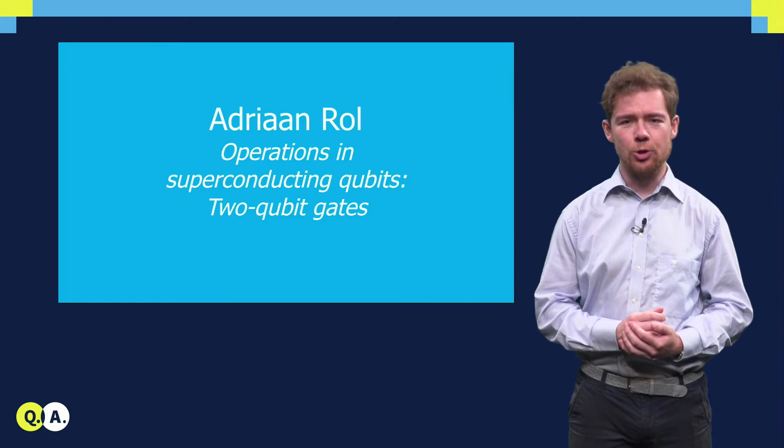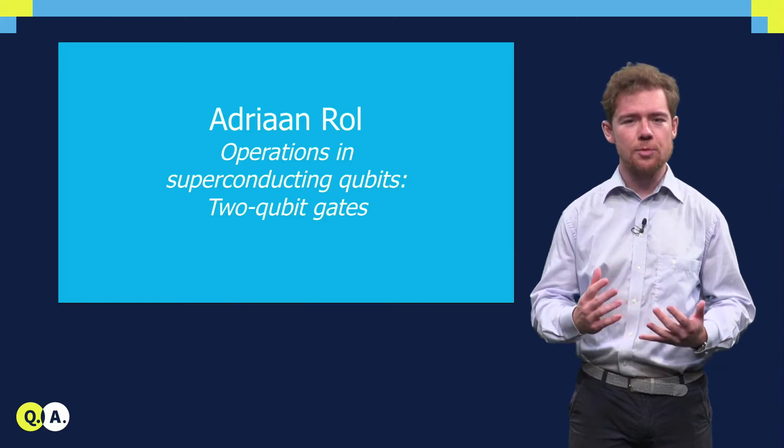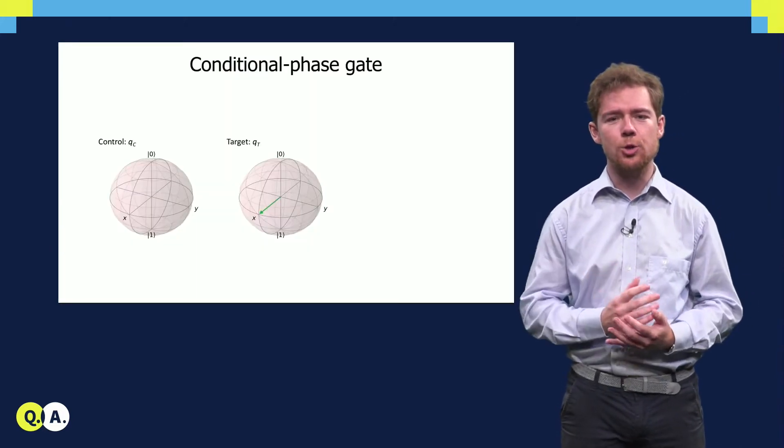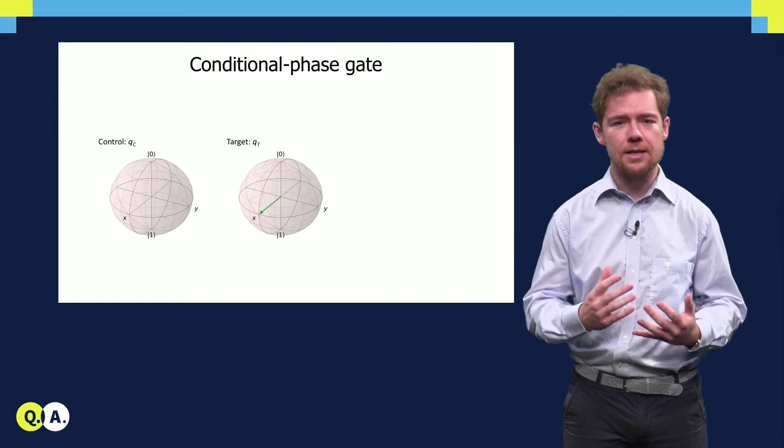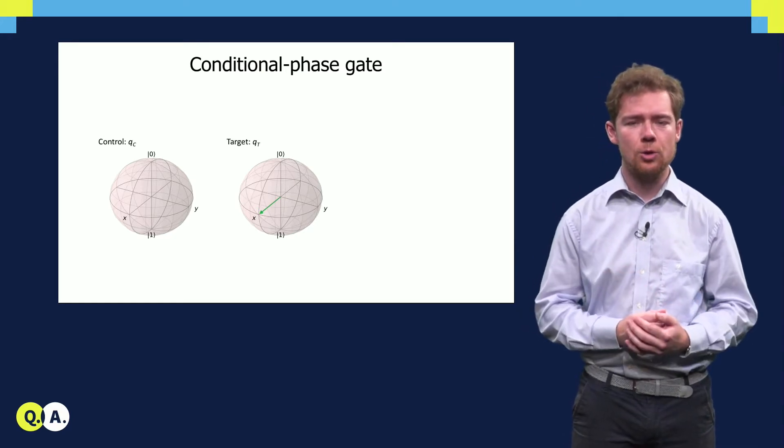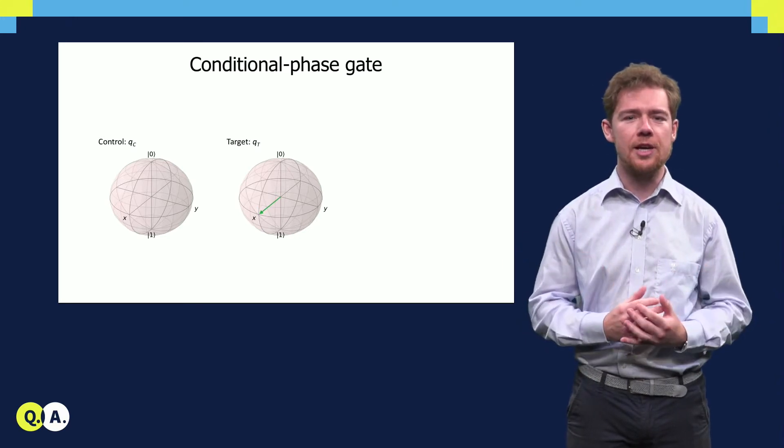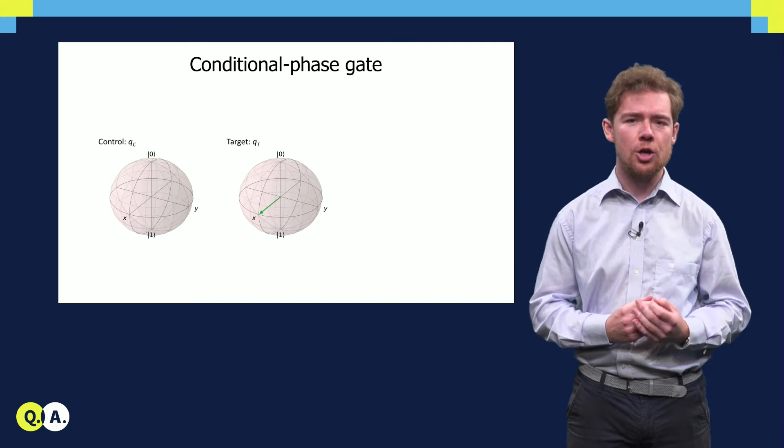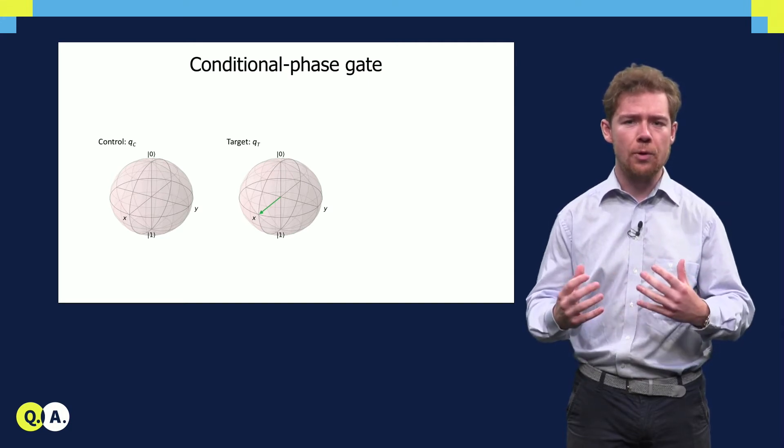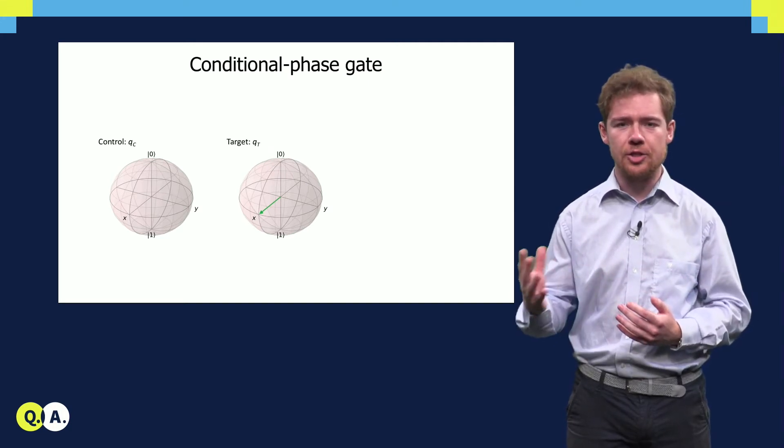Interactions between qubits are controlled using two-qubit gates. In transmon qubits, the two-qubit gate that is used to form a universal gate set is the conditional phase gate, also known as the c-phase or c-z gate. Applying a conditional phase gate to two qubits causes the target qubit to acquire pi-radians of phase based on the state of the control qubit.